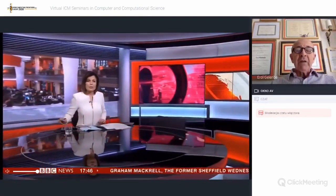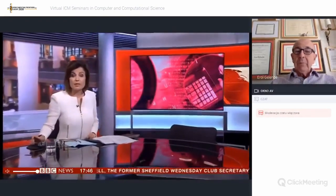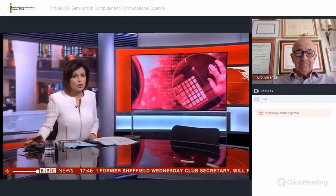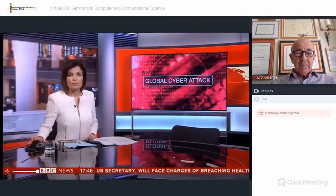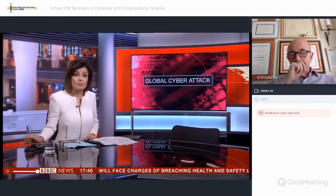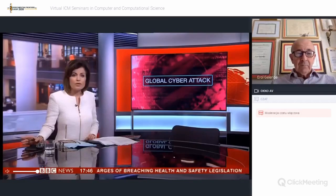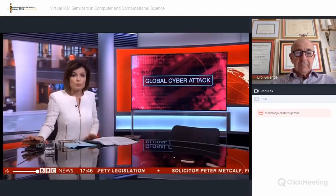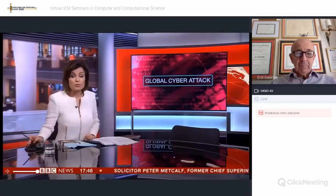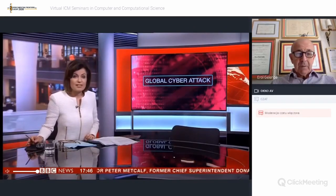A cyber attack which hit organizations around the world yesterday is being brought under control, according to security analysts. Among the institutions affected were the Ukrainian central bank, the British advertising agency WPP, and the port of Rotterdam. Researchers say they've developed a program that can protect individual computers, although it can't stop the bug from spreading.